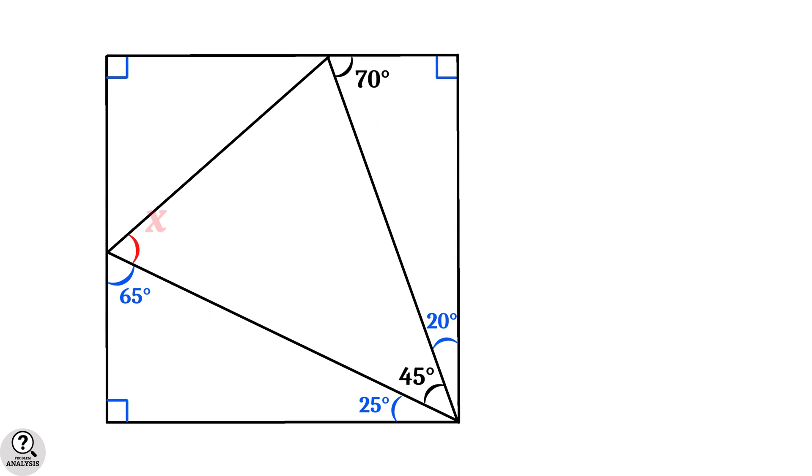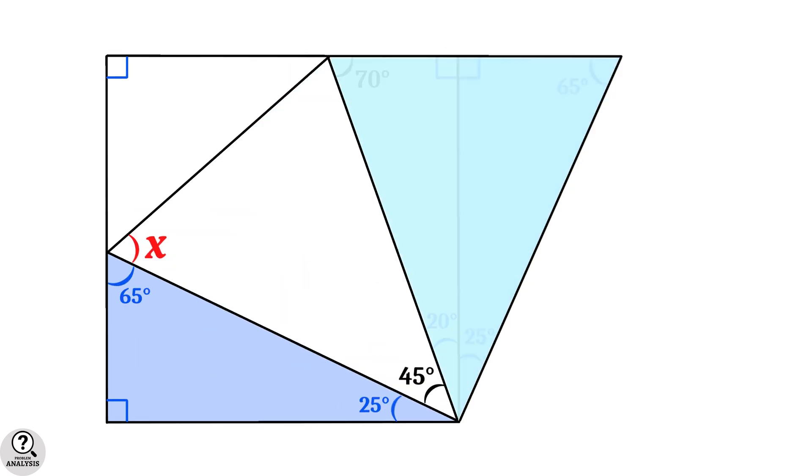Let's denote the missing angle by x. Now consider the bottom right triangle. Take a copy of this triangle and join it with the right edge of the square. Then a bigger triangle will form here. And note that its bottom angle will be 20 plus 25 equals 45 degrees.